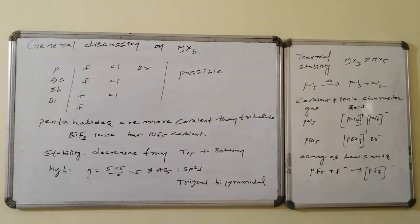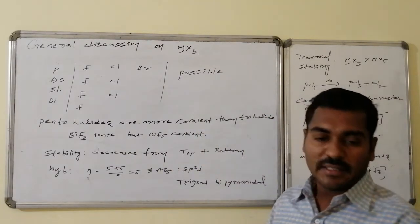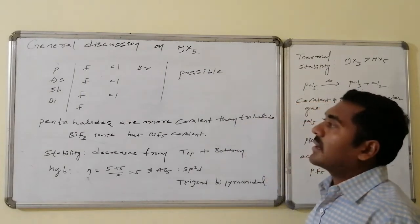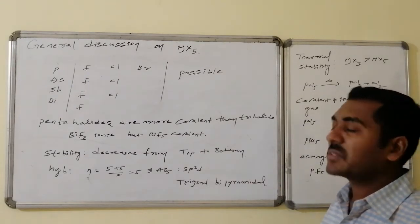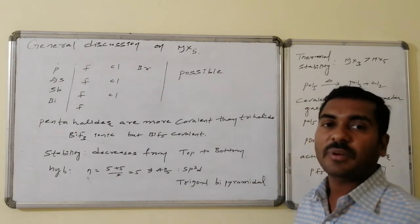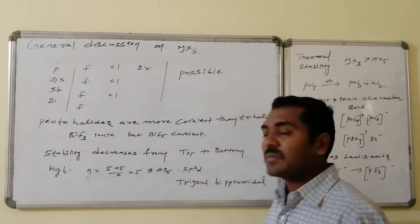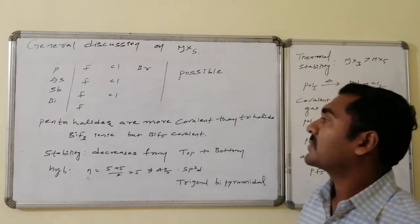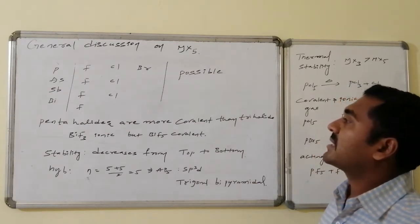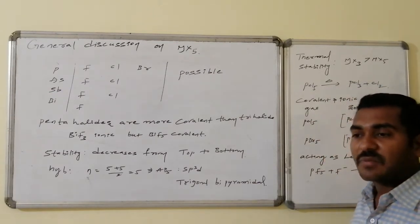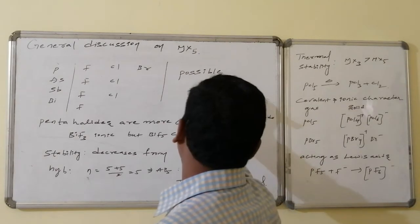General discussion over the pentahalides of the 5A group elements. As discussed earlier, the pentahalides are formed by phosphorus, arsenic, antimony, and bismuth — not nitrogen, because nitrogen does not have any kind of d-orbitals for the promotion of lone pair electrons to make them unpaired. So nitrogen does not form any kind of pentahalides. The total number of reported pentahalides is 8.